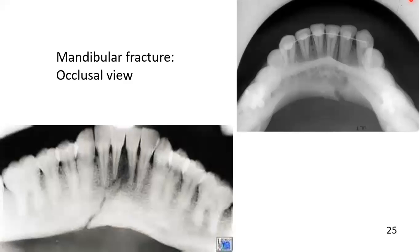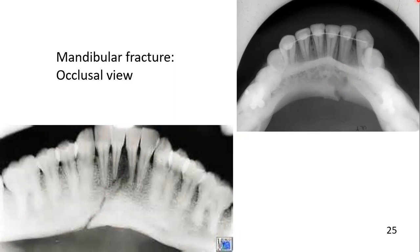This is the resultant image, and you can appreciate the fracture in the symphysis area. Both these radiographs are taken at 90 degrees occlusal for the mandible.